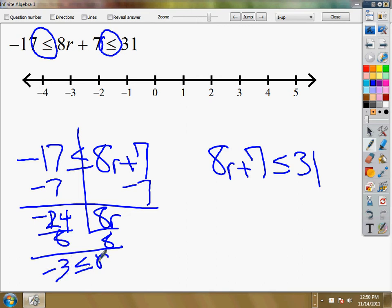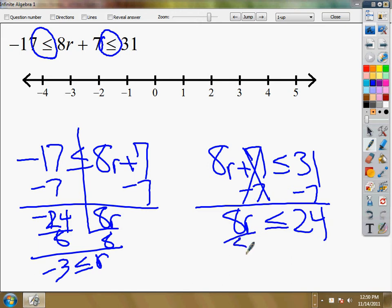And I know that it's greater than or equal to because I'm reading it from the variable side. On the other one those cancel, 31 minus 7. Positive 24. I'm going to divide by 8 on both sides. So it worked out that I just happened to get negative 3 and positive 3.